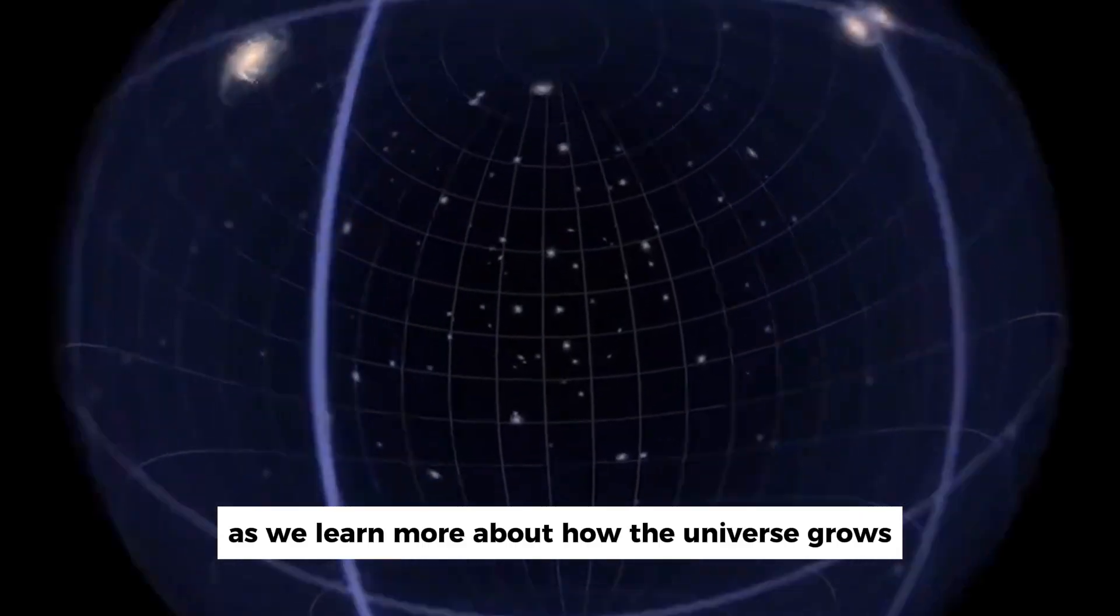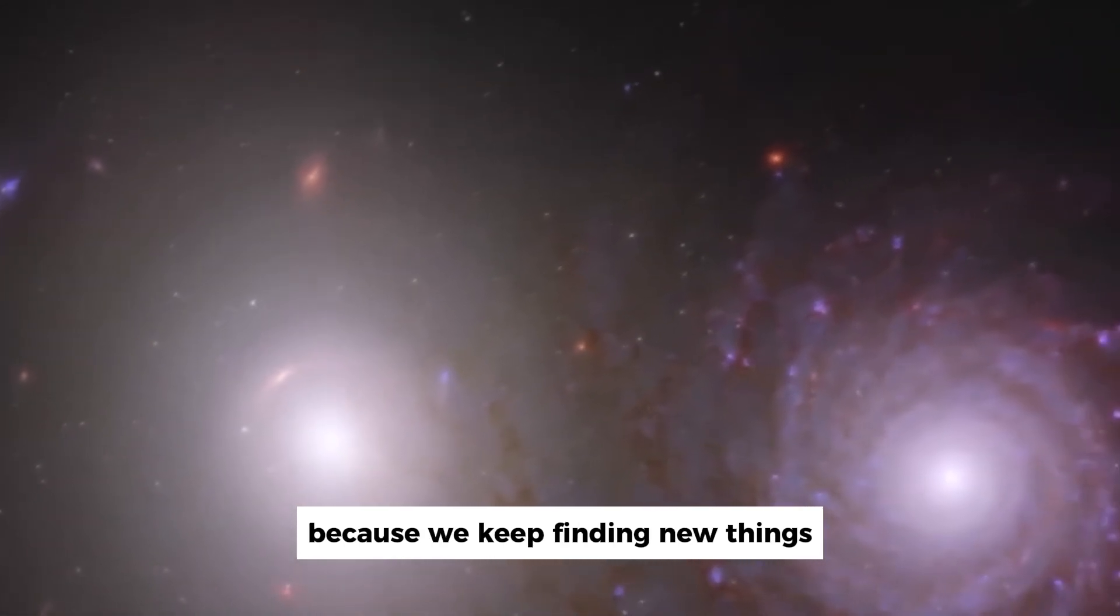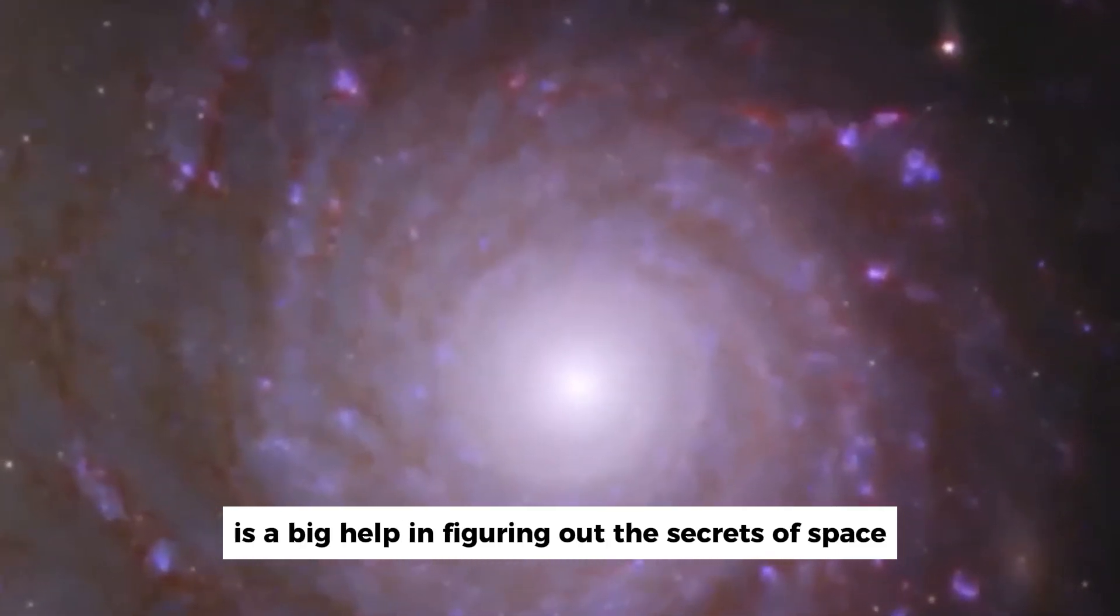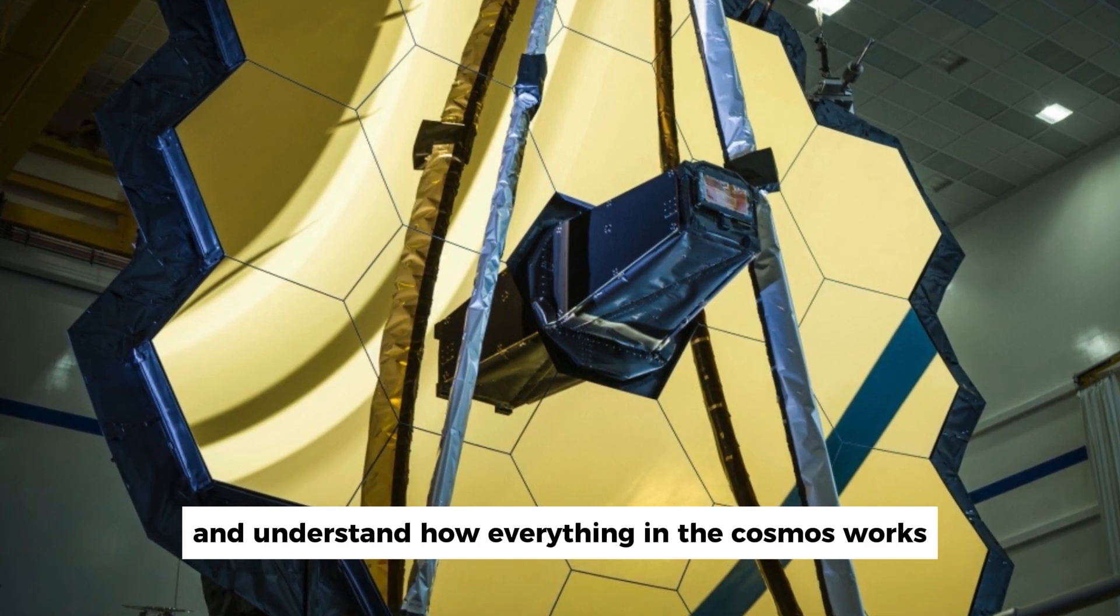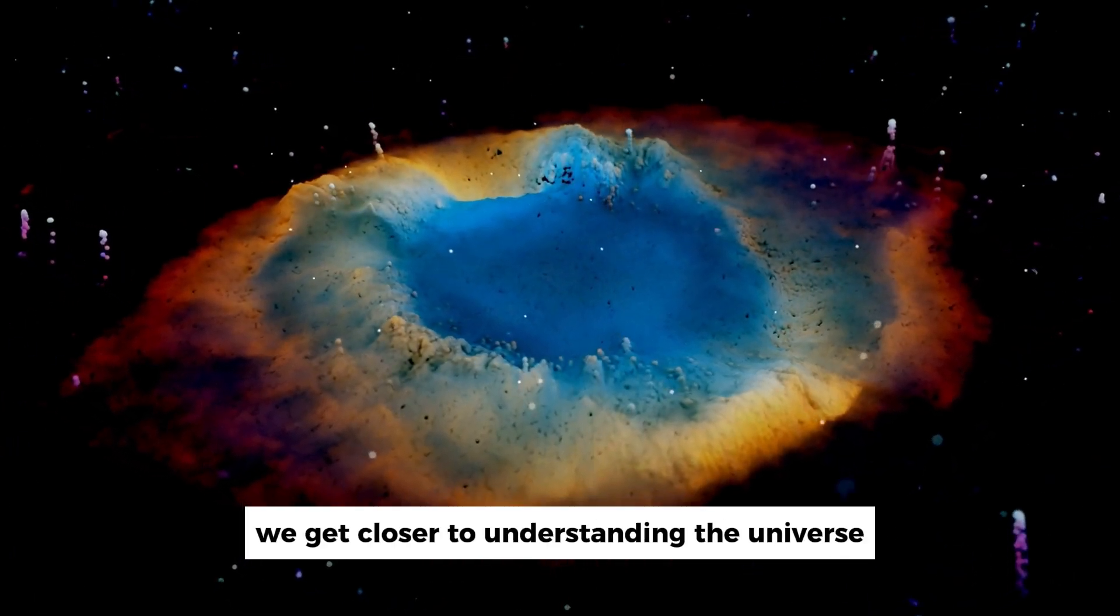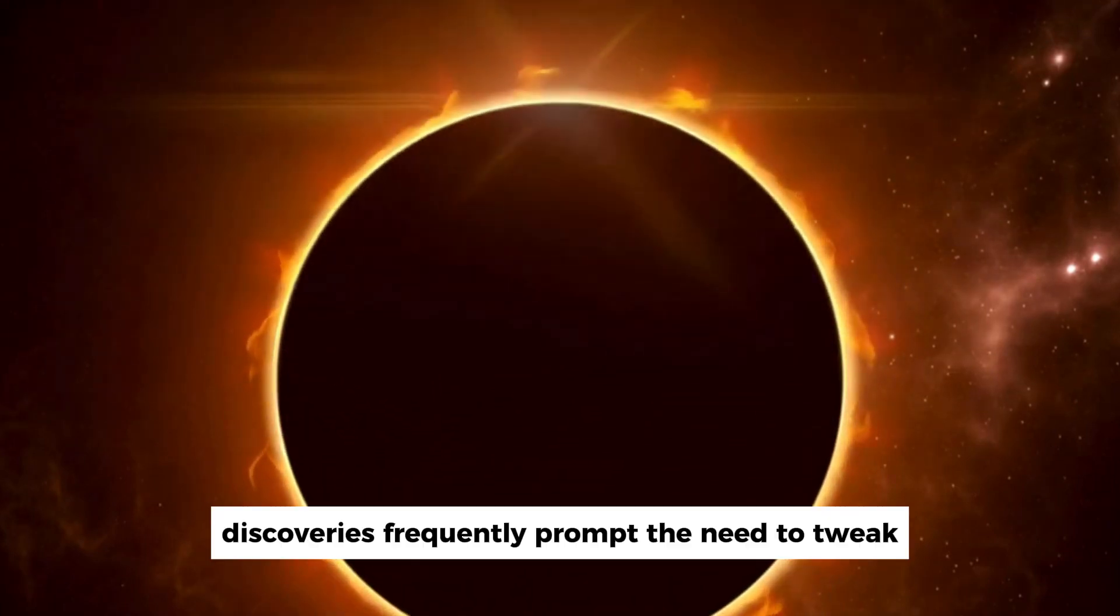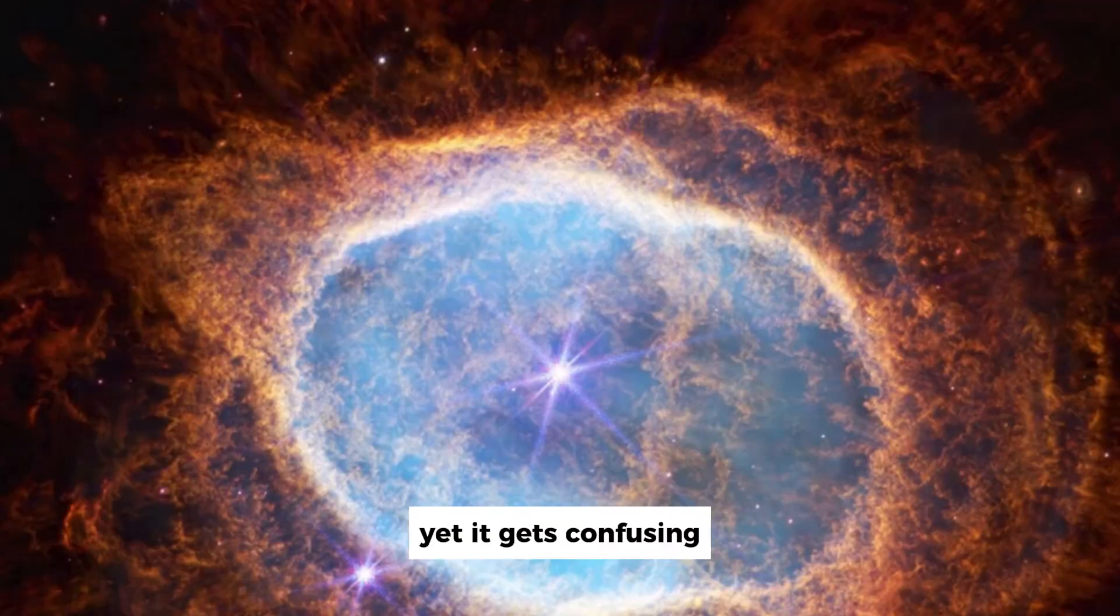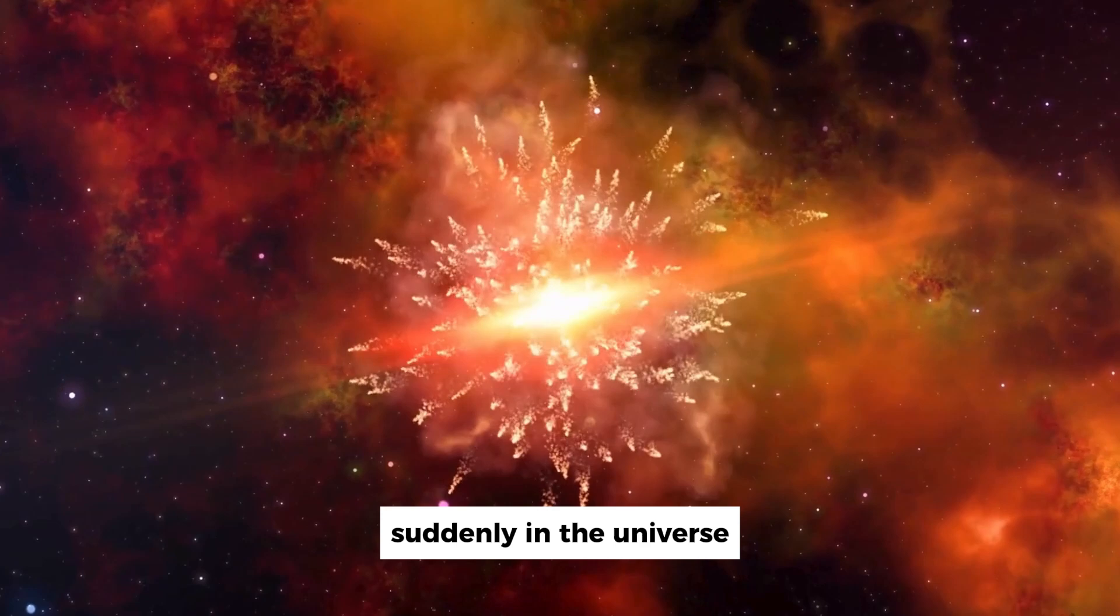As we learn more about how the universe grows and changes, our ideas about it keep getting updated because we keep finding new things. Using fancy tools for research is a big help in figuring out the secrets of space. These tools help us see things we couldn't see before and understand how everything in the cosmos works. So with every new gadget and discovery, we get closer to understanding the universe and how it came to be. Discoveries frequently prompt the need to tweak current theories or create brand new ones. Yet it gets confusing when unexpected and inexplicable events happen suddenly in the universe.